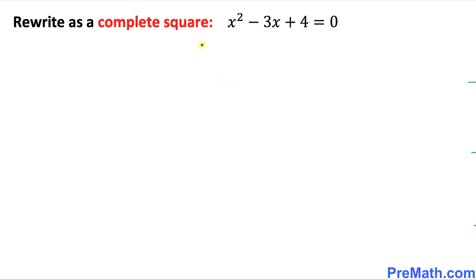And here is our next example, and we want to complete the square. Once again, we want to make sure that only x variables must be on the left hand side. That means this constant positive 4 must go on the other side. So we ended up with x squared minus 3x equals negative 4.